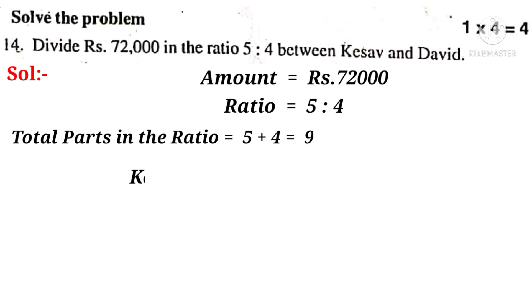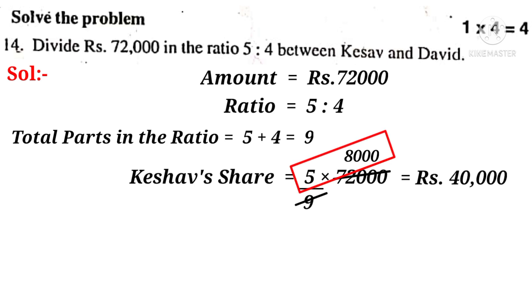Now let us find out Keshav's share is equal to 5 parts by total parts 9, that is 5 by 9 into 72,000. On simplification by 9, 9, 8,000 times. So that is equal to Rs. 40,000, because 8,000 into 5 gives Rs. 40,000.